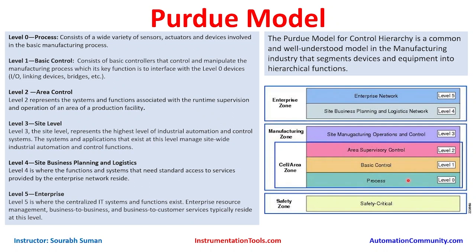Level 1 is the basic control level, consisting of basic controllers that control and manipulate the manufacturing process. We're talking about controllers and IO cards at this level, whose key function is to interface with level 0 devices. The basic control is directly connected to the process — cables from level 0 terminate at the IO level, or if wireless, devices communicate via Wi-Fi. In DCS or PLC systems, DI/DO and AI/O cables connect to the basic control.